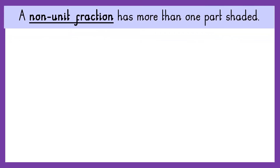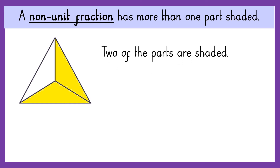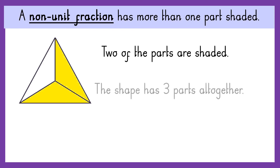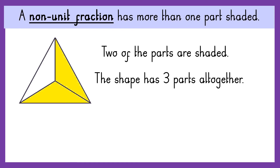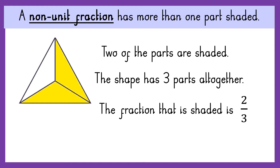A non-unit fraction has more than one part shaded. In this shape, two of the parts are shaded. The shape has three parts altogether. So the fraction that is shaded is two out of three parts altogether, or two thirds.